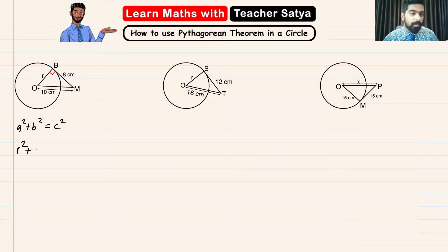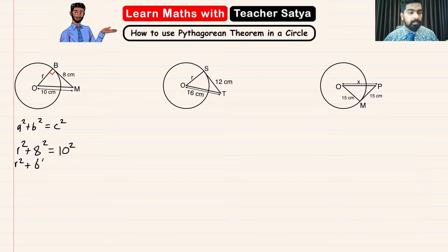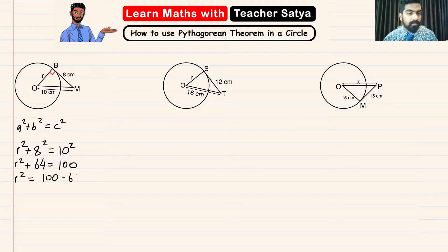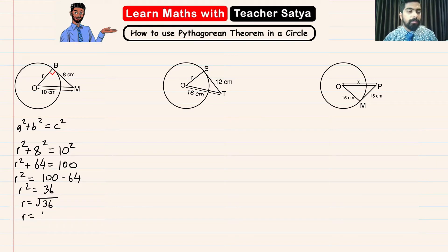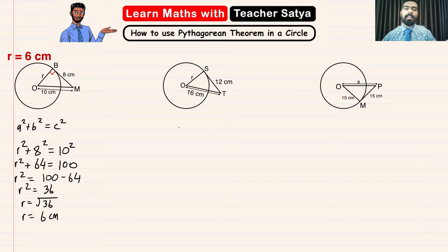So we have r² + 8² = 10². That gives us r² + 64 = 100. We transpose 64, so r² = 100 − 64, which is r² = 36. Therefore r = √36, so r = 6 centimeters.